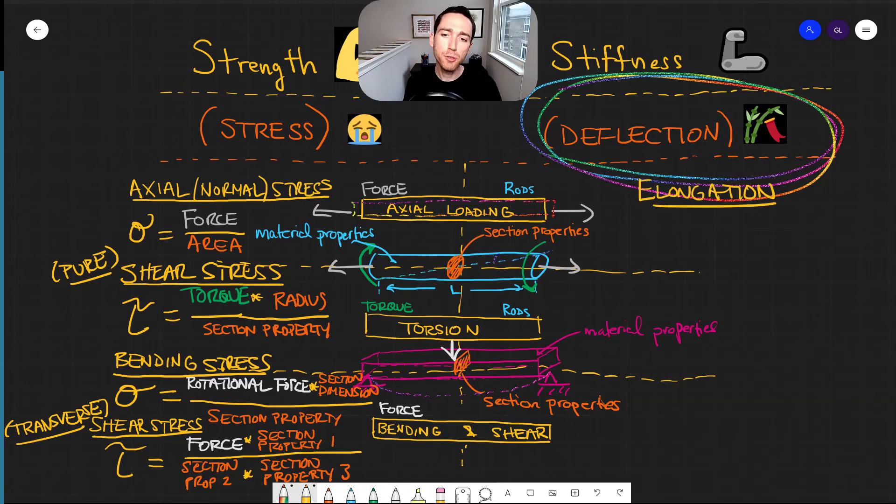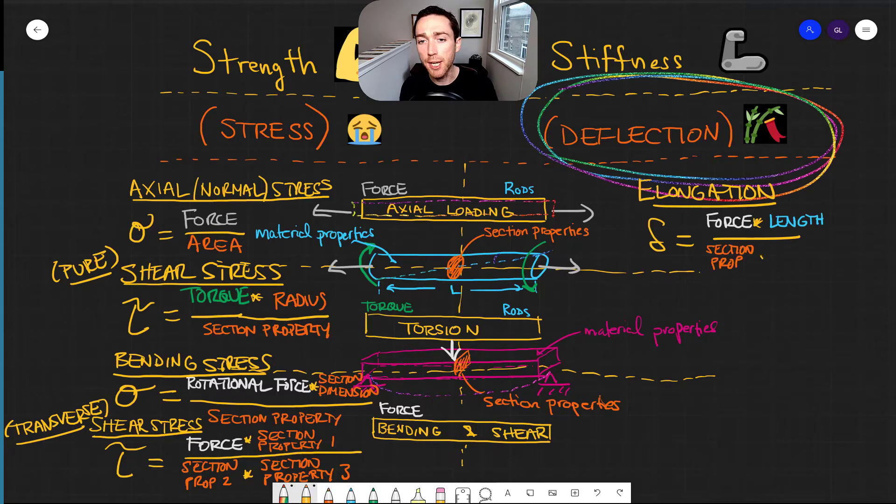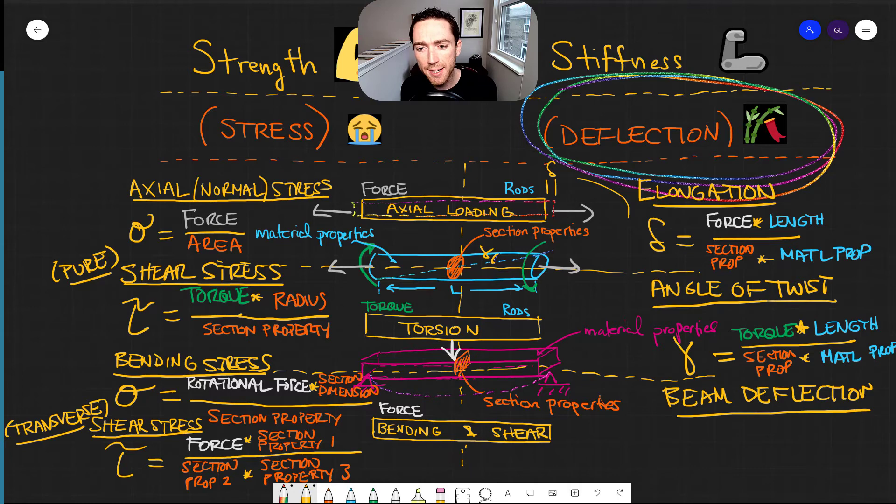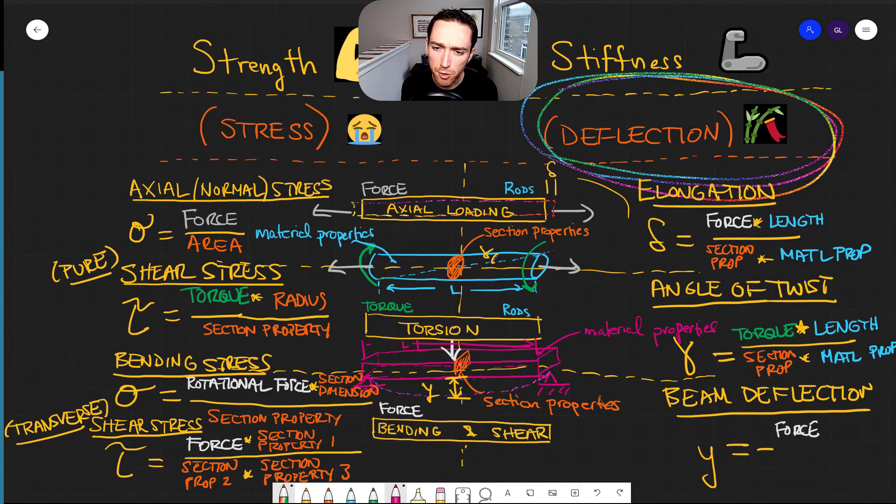And so using our material properties, we can actually estimate how something will elongate, how much it will twist, how much it will bend. And this is very useful, very helpful to make sure our designs are safe.